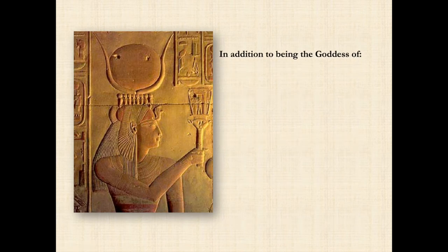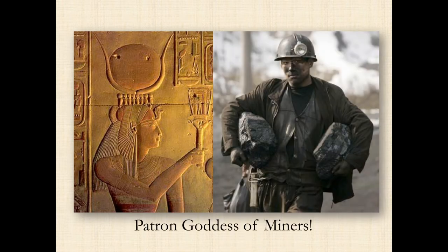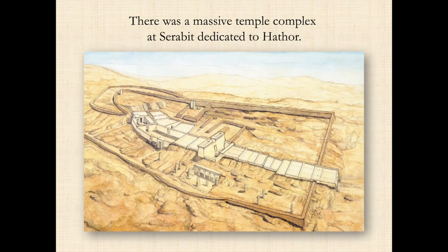Let's get back to our goddess. In addition to being the goddess of music, dance, fertility, the personification of joy, love, and motherhood, she was also the patron goddess of miners. Digging down in the earth to get resources or semi-precious stones like turquoise is very dangerous business. So it's not surprising that at Serabit there would be a temple dedicated to Hathor. When the miners went down into the earth, they would make offerings to Hathor that they might find turquoise — and if they came out safely, they still made offerings because mining is deadly.